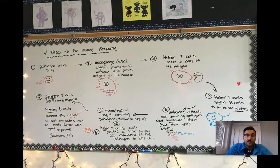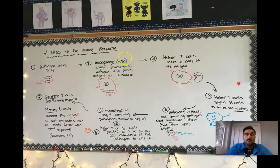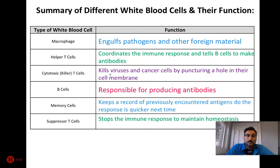So, I'll zoom out here for a second. I posted this on our Google Classroom, but go ahead and take a screenshot of this if you'd like. These are my seven steps to the immune response for Science 30 in the Alberta curriculum. Thanks, guys.